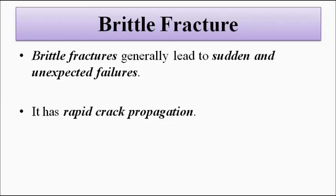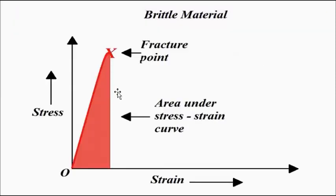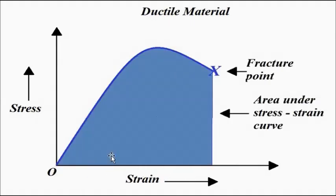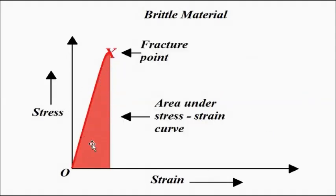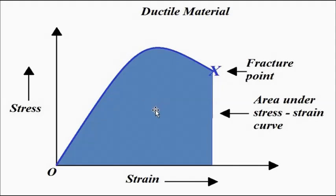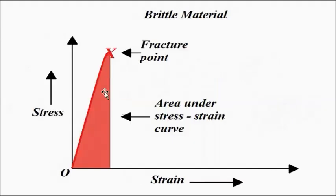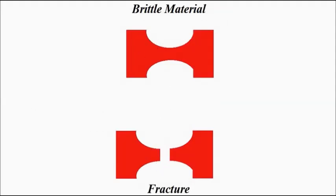Brittle fracture, in contrast, happens suddenly and unexpectedly. Brittle materials cannot withstand much stress and do not undergo much strain before fracture. The strain values undergone by brittle materials are very low — they break or disintegrate at much lower strain values. The area under the stress-strain curve is less for brittle materials. So if the area is more, the material is ductile; if less, it is more brittle. Brittle materials have rapid crack propagation.